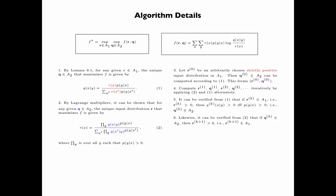Likewise, it can be verified from equation 2 that if Qk is in A2 then Rk+1 is strictly positive. Therefore, Rk is in A1 and Qk is in A2 for all k greater than or equal to 0. In other words, if we start with any R0 that is strictly positive, then the subsequent R's and Q's will satisfy the required constraints.